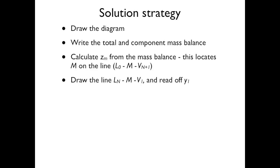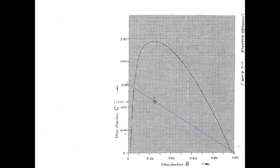The next step in our solution strategy is to draw the line L_N, M, V₁ and read off the value of Y₁. L_N is our final raffinate composition, which is stated in the problem and marked on the left-hand side of the curve. We draw a straight line from L_N through point M until it intersects the other side of the curve at point V₁, and read across to the left axis — the mass fraction of C — to obtain Y₁ equals 0.380.